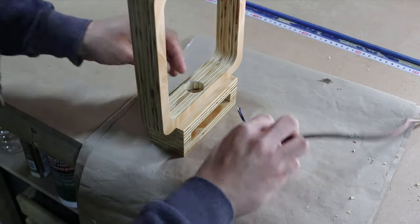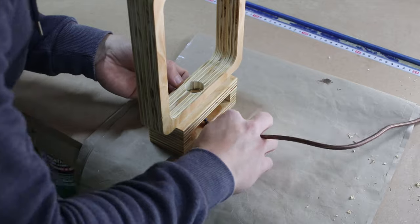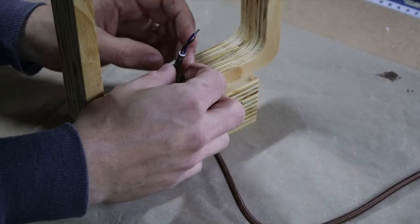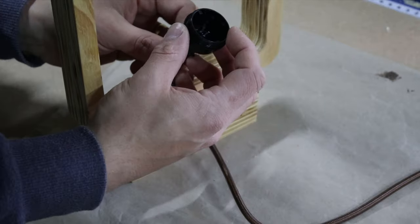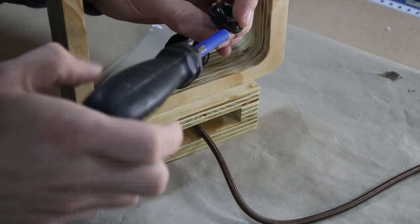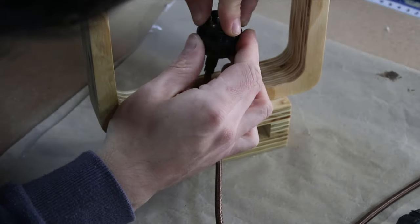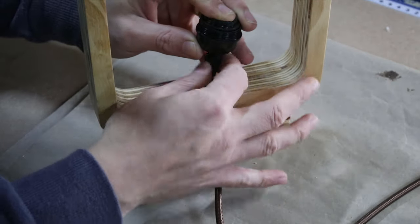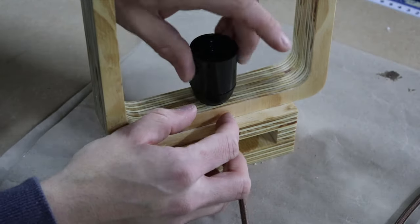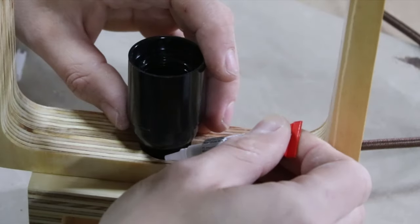When the glue dried, I brought the cable through the hole, starting from the bottom. Finally I put back the light, and I made sure everything goes back the same way as before disassembling it. Now I just had to pull the cable back to make sure the light sits on the wood, and I glued it with super glue.